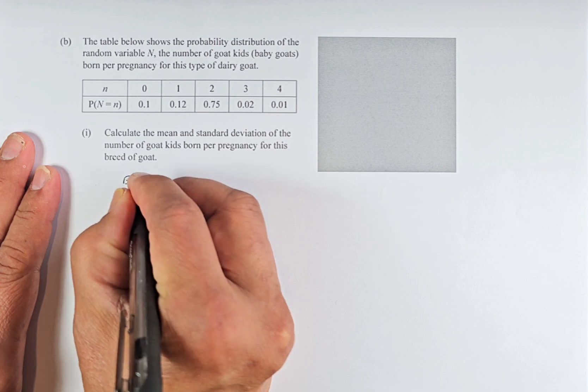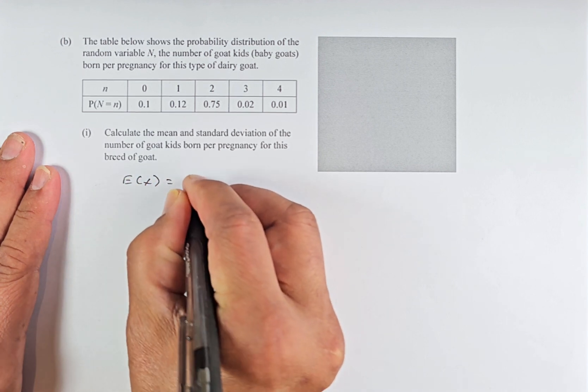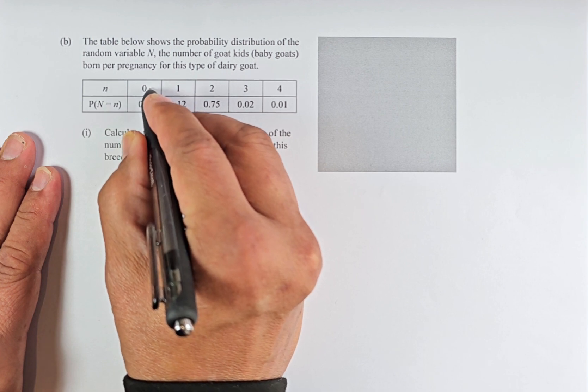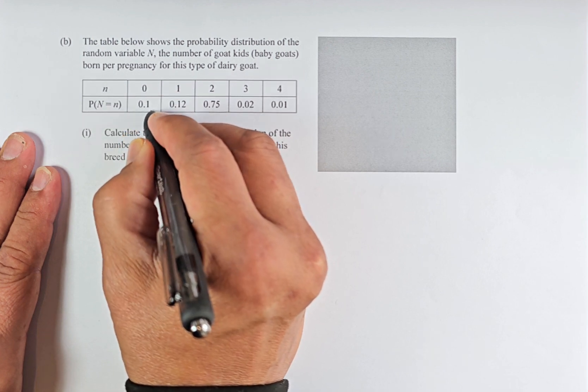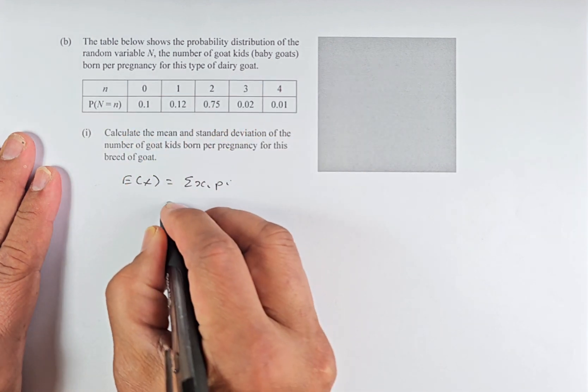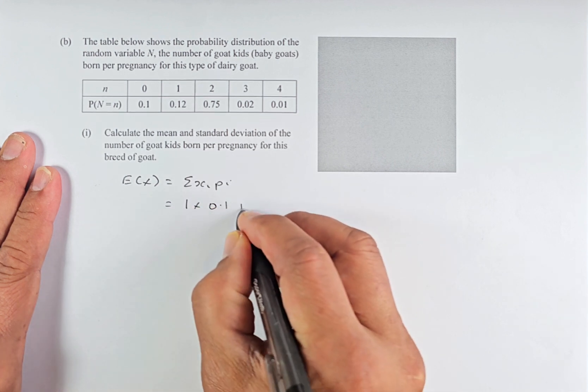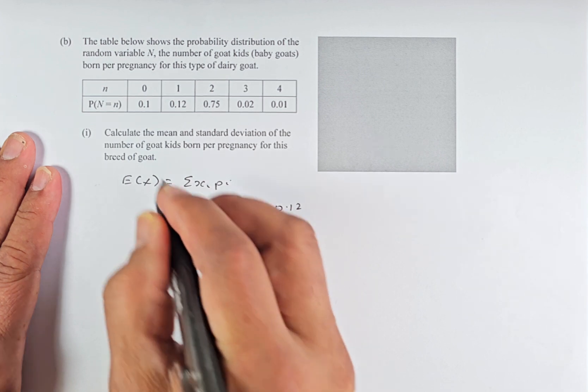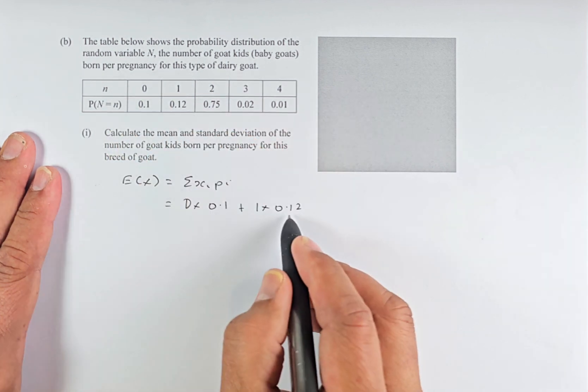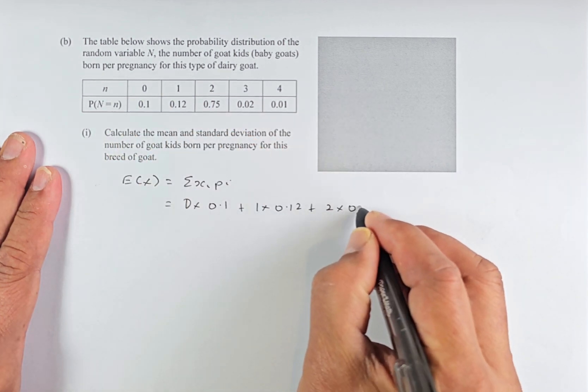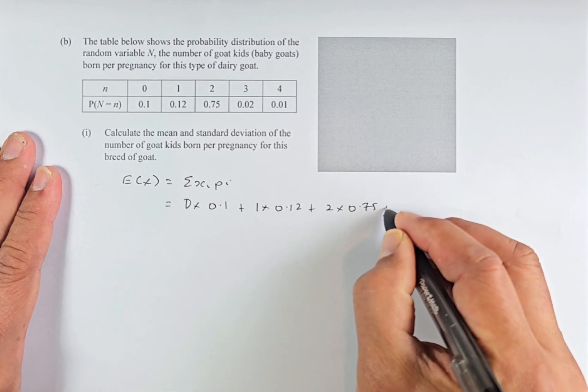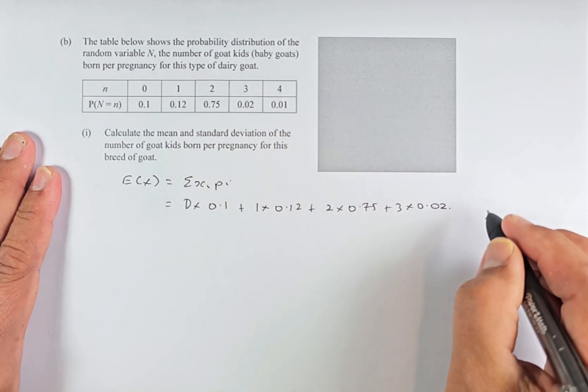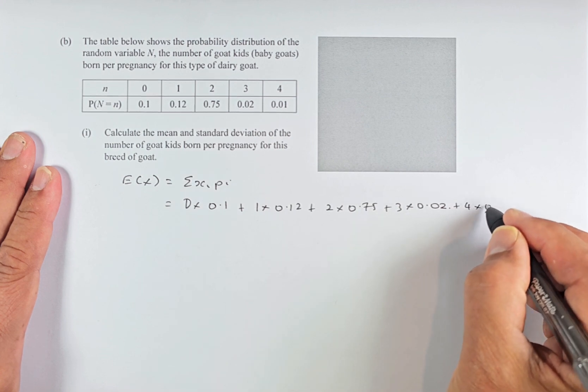If you don't know what is the expected value, it's sum of xipi. So we're going to take the sum, the xi or ni times the probability. So it's going to be 0 times 0.1, 1 times 0.12 plus 2 times 0.75 plus 3 times 0.02 and then plus 4 times 0.01.